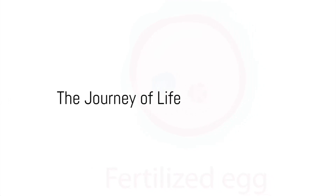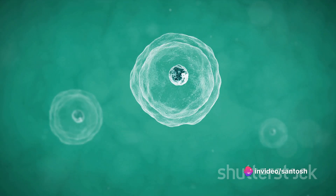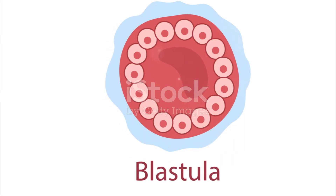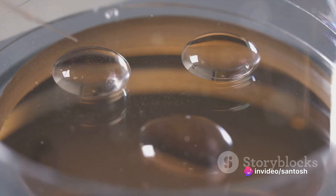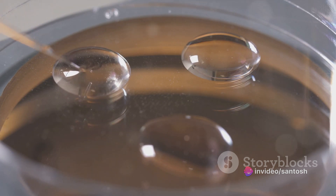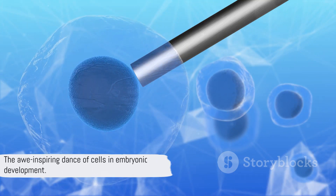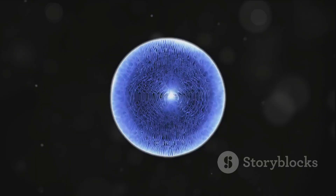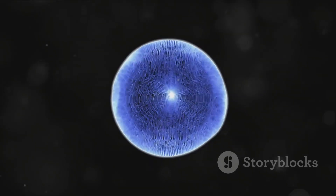In a nutshell, the journey of life begins with fertilization, where a sperm and an egg unite to form a zygote. The zygote then undergoes numerous divisions in the cleavage stage to become a morula. The morula evolves into a hollow sphere of cells during the blastula stage, preparing for implantation. Finally, the blastula transforms into a gastrula, organizing itself into three layers that will develop into different body systems. These stages are the first steps in the awe-inspiring process of embryonic development — a dance of cells choreographed by nature, taking us from a single cell to a complex organism, illustrating the incredible power of life.